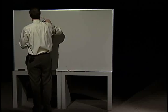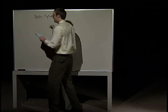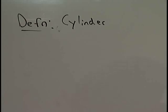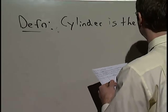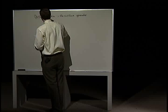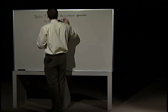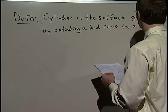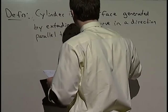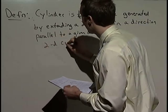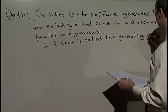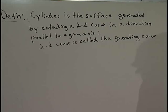Definition. A cylinder — what we think of is an object with circular cross-sections, something like a tube. But a cylinder is more than that in the language of multivariable calculus. It is any surface generated by extending a 2D curve in a direction parallel to a given axis. We call the 2D curve the generating curve. So these cylinders certainly include what we think of as a traditional circular cylinder, but they also include other kinds of shapes as well.